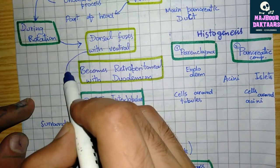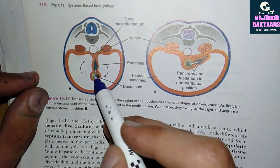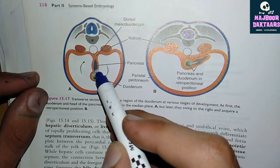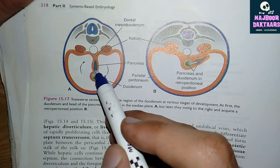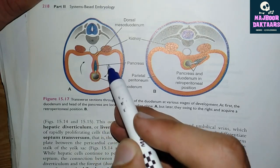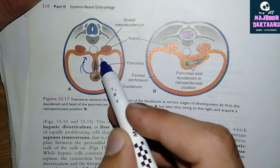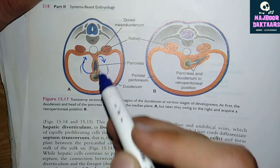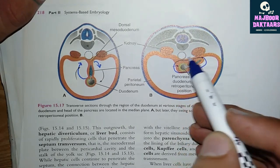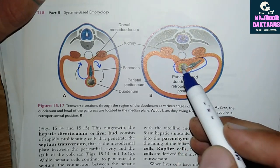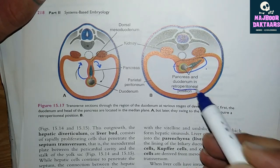During rotation, the pancreas becomes retroperitoneal along with the duodenum. In cross-section, the duodenum is anterior and the pancreas is posterior. During clockwise rotation, both the duodenum and pancreas attach directly to the posterior abdominal wall, making them retroperitoneal.